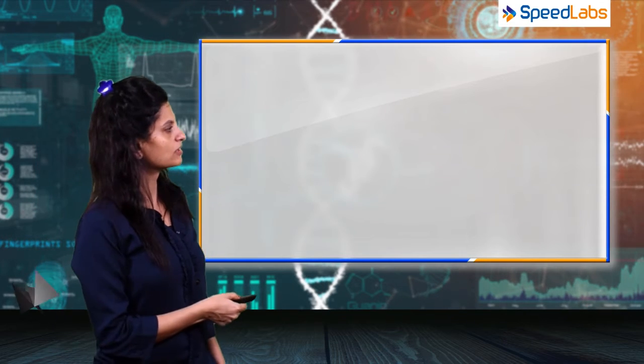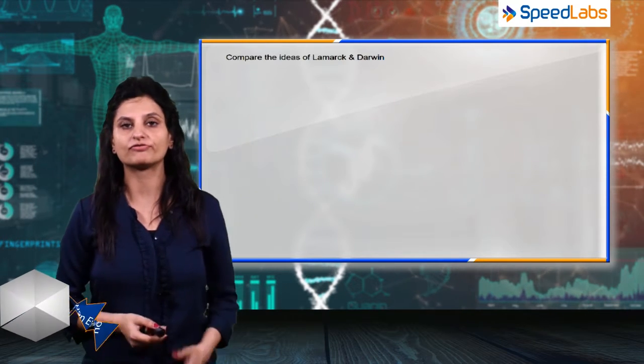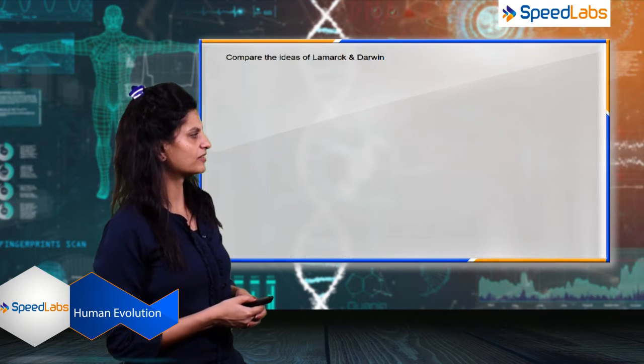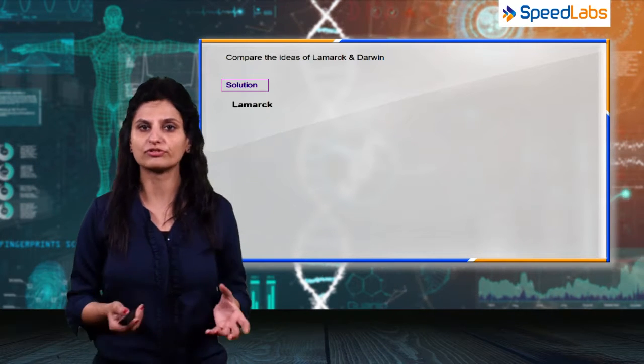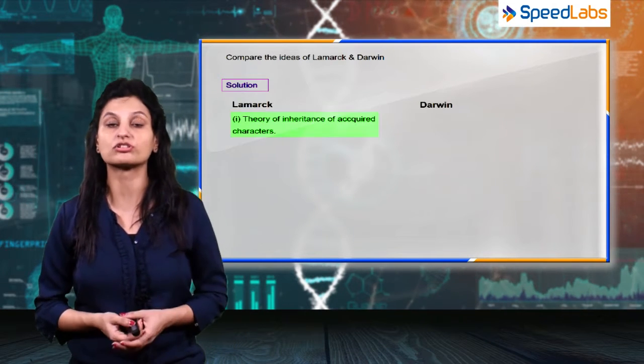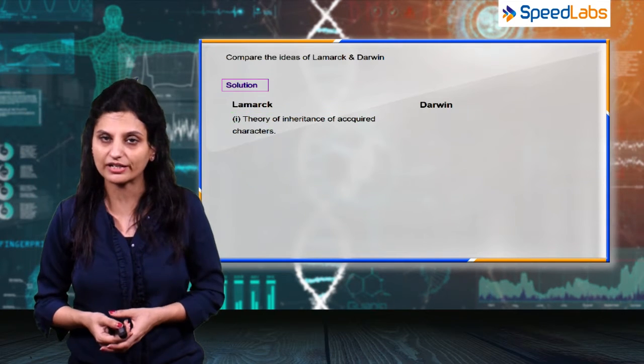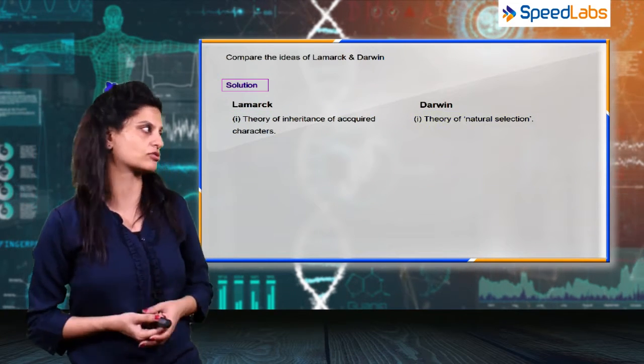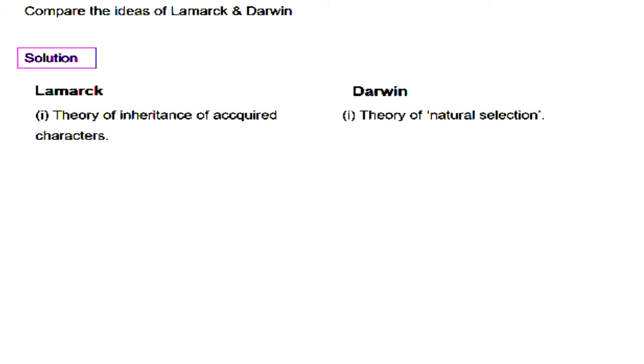The next question is: compare the ideas of Lamarck and Darwin. Both Lamarck and Darwin gave two different theories. Lamarck's theory was the theory of inheritance of acquired characters. Darwin's theory was the origin of species and natural selection. The first point of difference is based on the names of the theories.